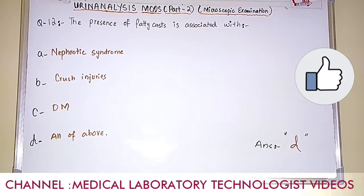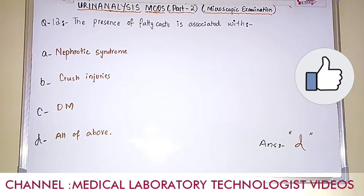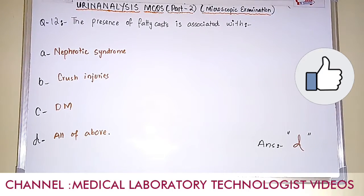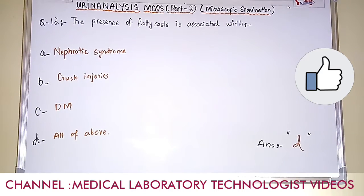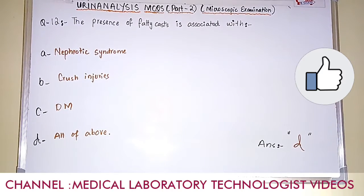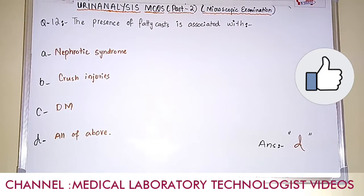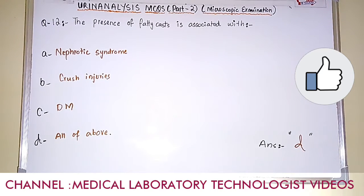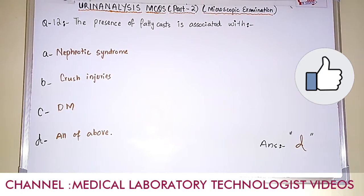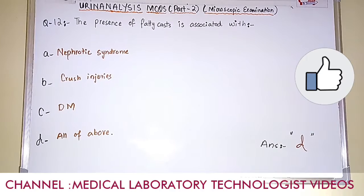Question number 12. The presence of fatty casts is associated with. Option A: nephrotic syndrome. Option B: crush injuries. Option C: diabetes mellitus. Option D: all of the above. The answer is option D, all of the above. The presence of fatty casts is associated with nephrotic syndrome, crush injuries, and diabetes mellitus.